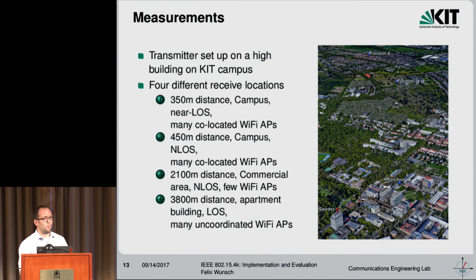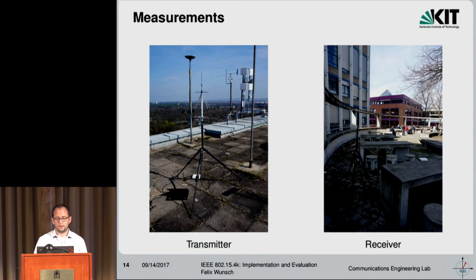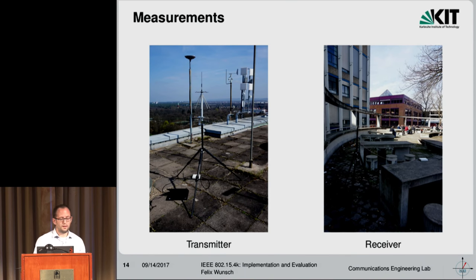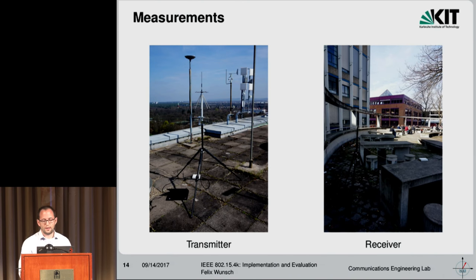We also noted how many Wi-Fi APs were nearby because we're in the 2.4 gigahertz ISM band. What everybody would probably expect is lots of Wi-Fi interference, and we wanted to see how much that impacted our performance. The transmitter on the roof of the physics building has an omnidirectional antenna, a B210, and an ordinary commercial off-the-shelf laptop. The receiver setup looks pretty much the same — an ordinary Wi-Fi omnidirectional antenna, USRP, laptop, and mounted on a stand.